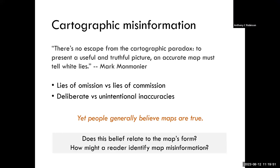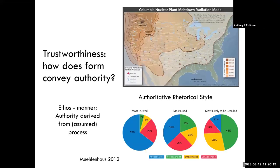People generally believe that maps are true, unless shown a map so ridiculous that they can't believe it's true. The default presumption is that people believe maps are true. One of the things I was interested in is whether this belief relates to a map's form. A question I'm interested in is: how might a map reader identify if there is map misinformation?